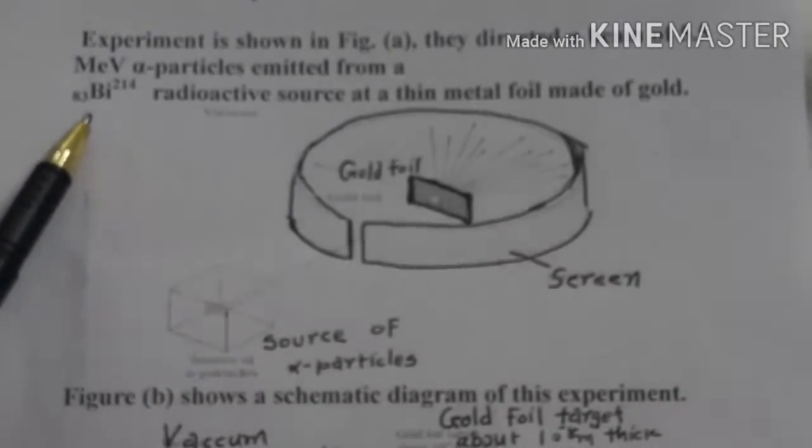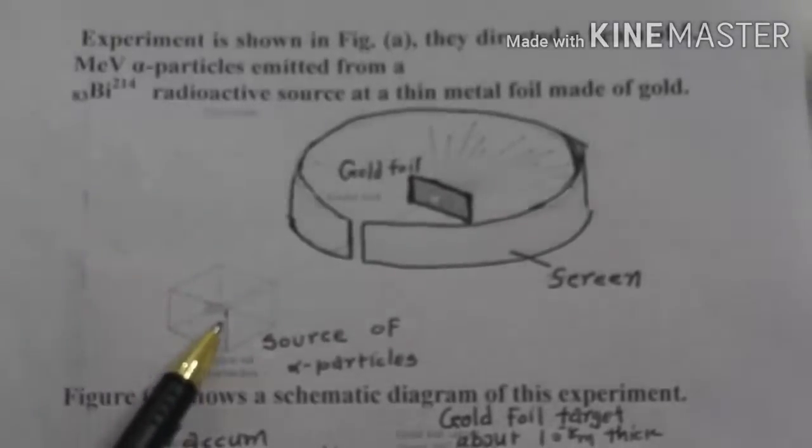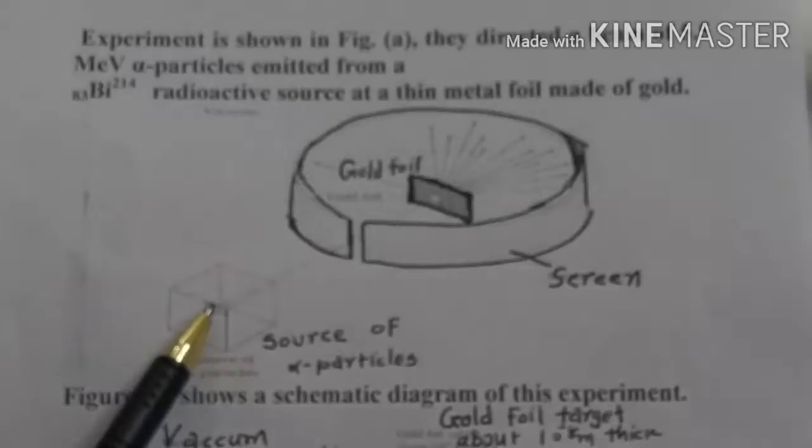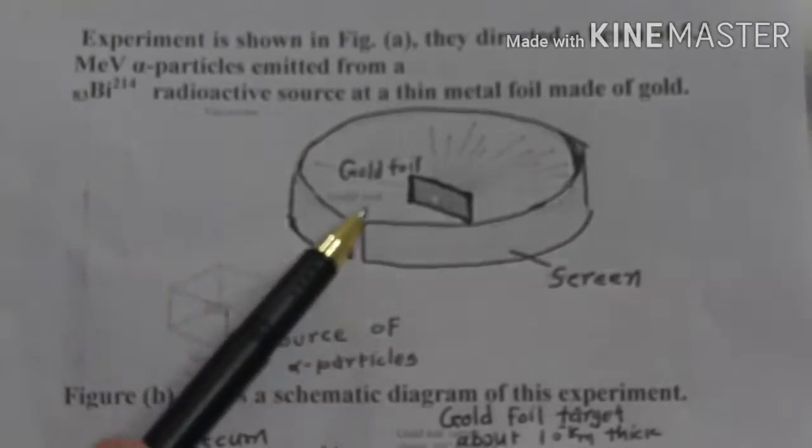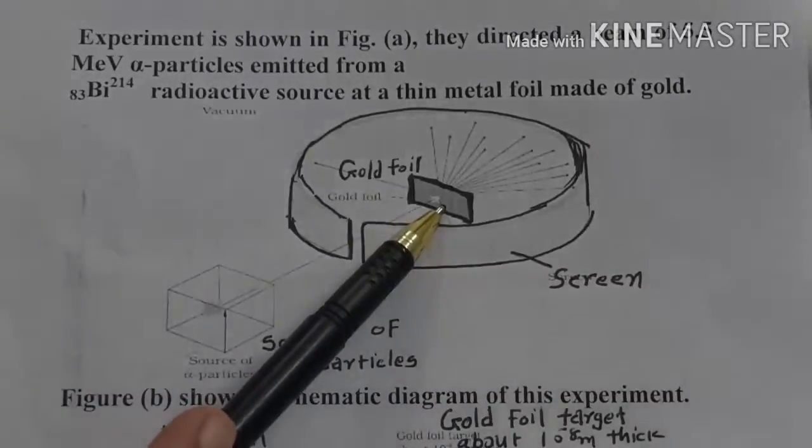You know the radioactive elements are emitting alpha particles, beta particles. Here, the source of alpha particles is bismuth and it is emitting the alpha particles having an energy of 5.5 MeV. And then they emitted from the alpha particle source and they hit the gold foil.